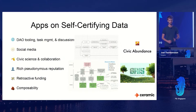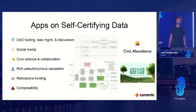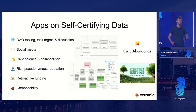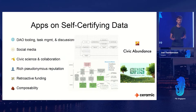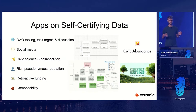Once we have this easier way of building applications using Ceramic and ComposeDB, the first things we could focus on is the DAO ecosystem - tooling around how we manage tasks, bounties, and discussions around proposals. If we put that into self-certifying data structures like Ceramic, you can stop relying on centralized applications and being at their whim. If your Discord forum is gone, you'd scramble to coordinate your DAO community. But if you have this in a verifiable data structure, multiple community members might be running a backup of your data - and even if half of them go offline, you can easily recover.